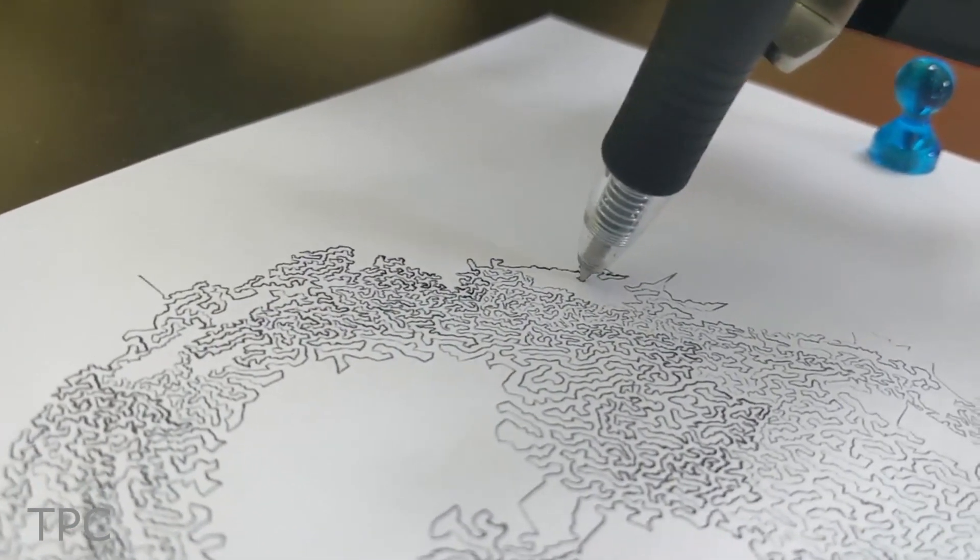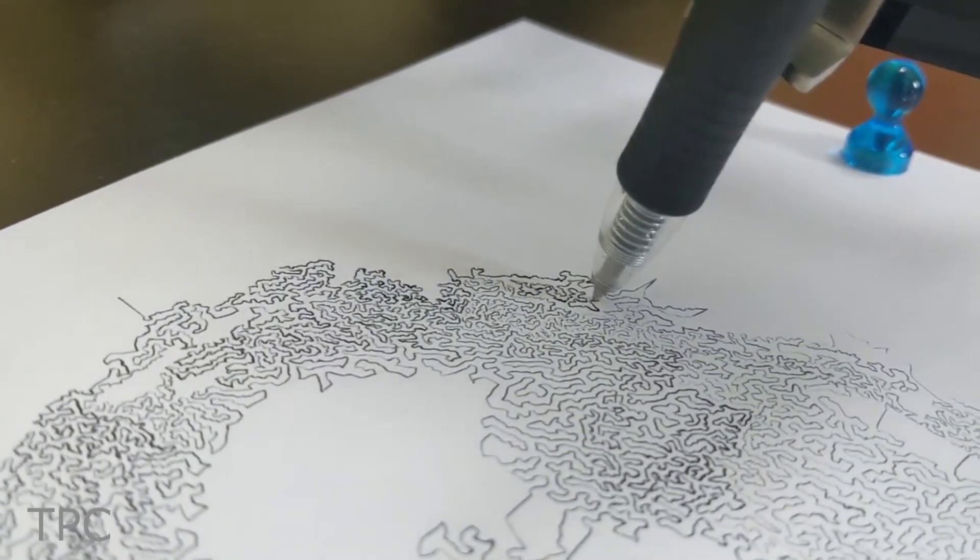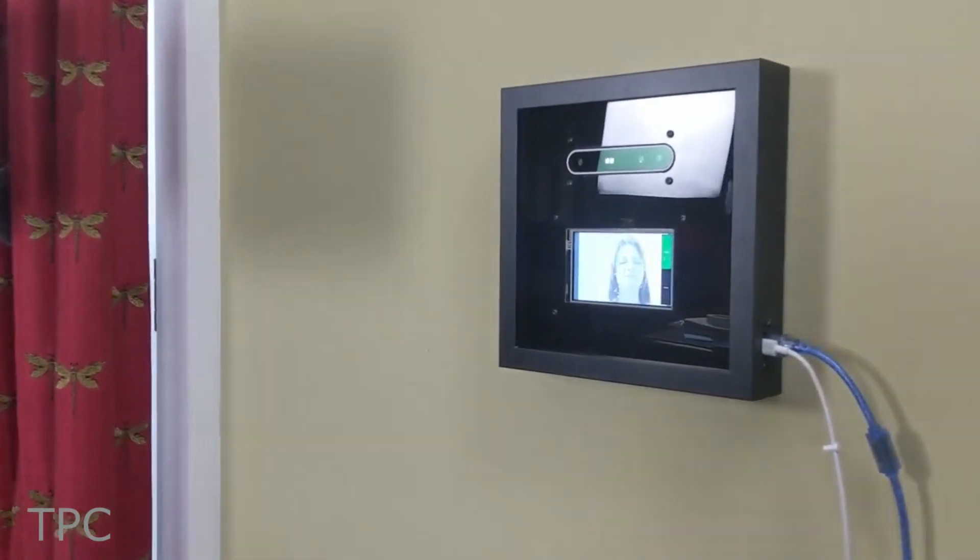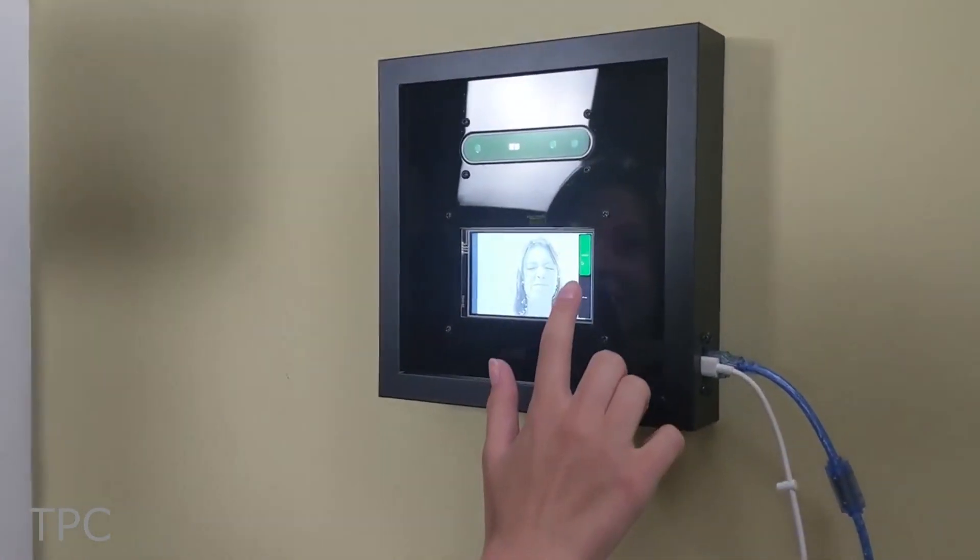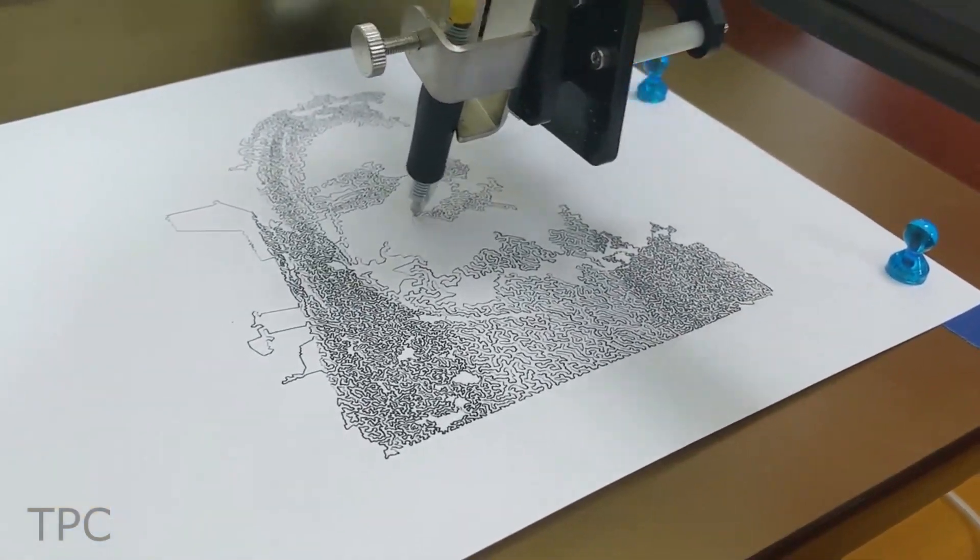It then uses a Raspberry Pi to convert that picture to a drawing made using a single continuous line, known as traveling salesman problem art. When the user presses the draw button, it outputs that drawing as G-code to a CNC machine, which draws it onto paper.